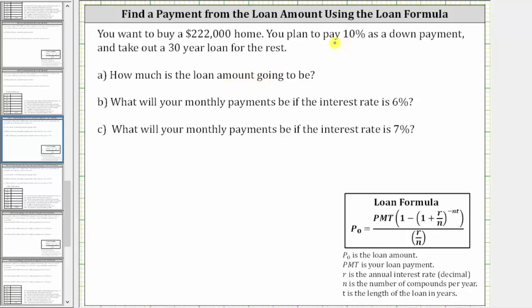Because you are putting 10% down, the loan amount is going to be 90% of $222,000. Since 100% minus 10% is 90%, we need to find 90% of $222,000. To find the percent of a number, we convert the percent to a decimal and multiply.